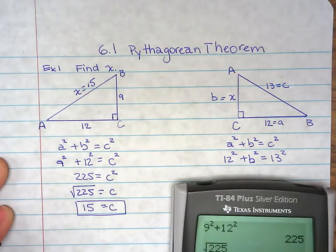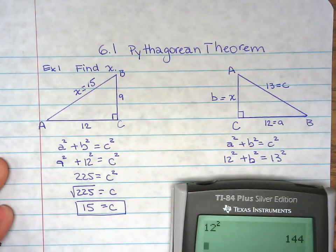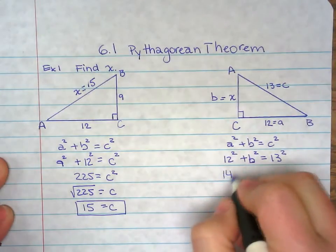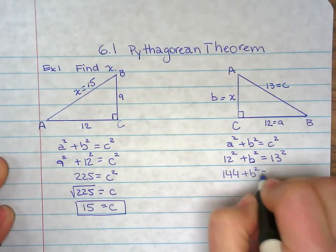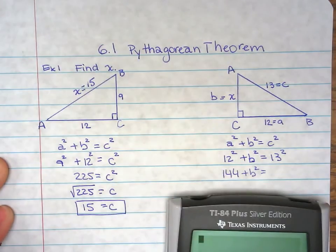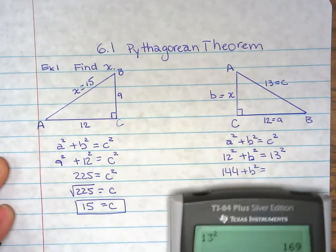So square 12, just once. So 144 plus b², square 13, 169.